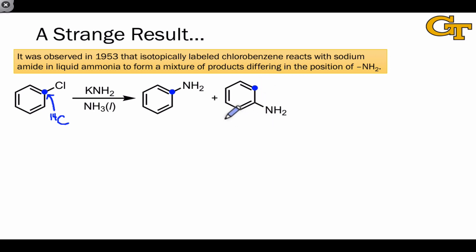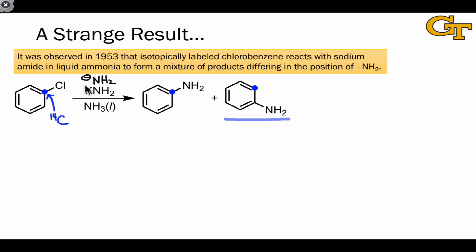While this result was hard to argue with, the explanation is a little more complicated, as there are a number of mechanisms that could lead to this product. We could imagine, for example, addition followed by some kind of migration — a sort of 1,2-rearrangement step — leading to this product. Or we might imagine NH2- behaving not as a nucleophile at all, doing something completely different rather than nucleophilic addition. One result that argues against the rearrangement idea is that the yields of these two products are approximately equal.